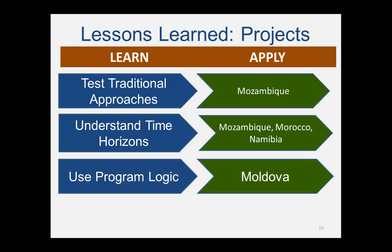Lesson number three: use the program logic. The case of Armenia showed us the importance of always going back to the program logic during implementation, especially in integrated projects that pair training with irrigation or rural roads. In Armenia, the irrigation infrastructure was delayed, but farmer training went ahead on schedule. This created a big gap right in the middle of the program logic — trained farmers didn't have reliable access to water, which was one of the major drivers of behavior change. At the same time, we continued with the evaluation, which began and ended before the irrigation was in place. In retrospect, we should have pressed pause and reconsidered the timing of both the training and data collection. That's exactly what we're doing now in Moldova — we've already rescheduled farmer training in response to anticipated infrastructure delays to keep activities aligned with the program logic.